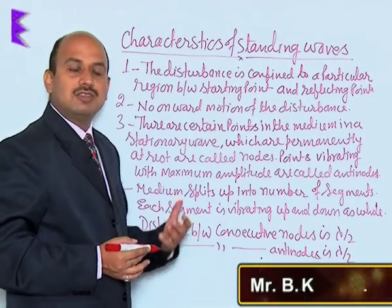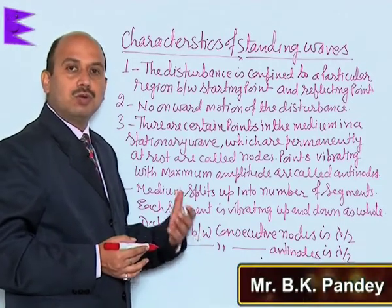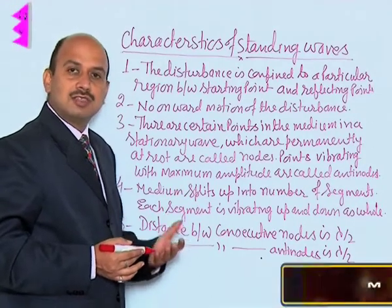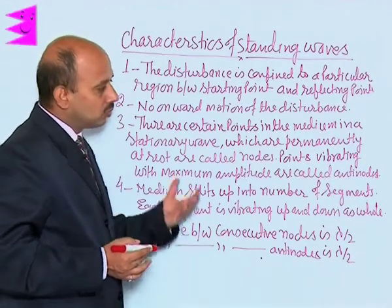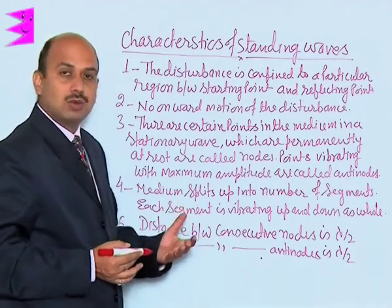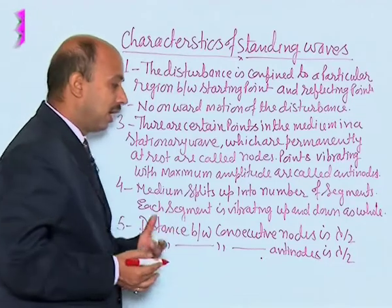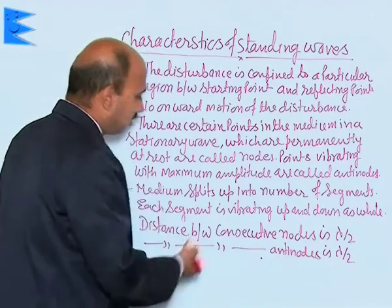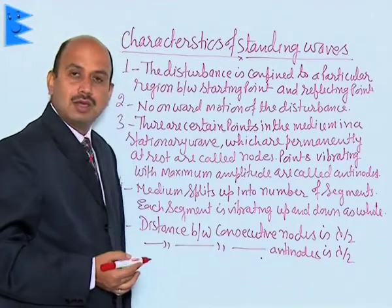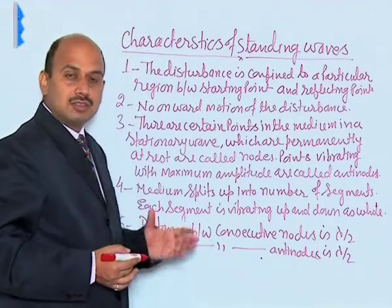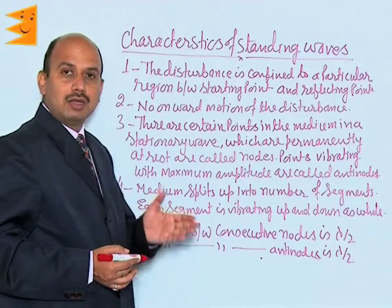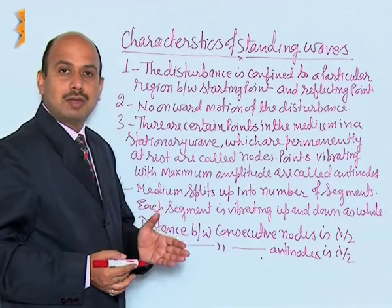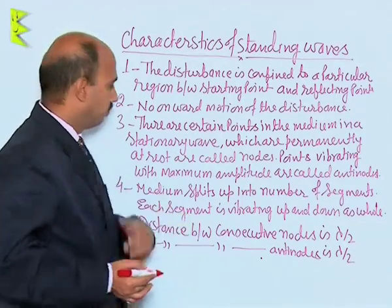The distance between two consecutive nodes is lambda by 2, and the distance between two consecutive antinodes is also lambda by 2. The distance between one antinode and the adjacent node is lambda by 4.